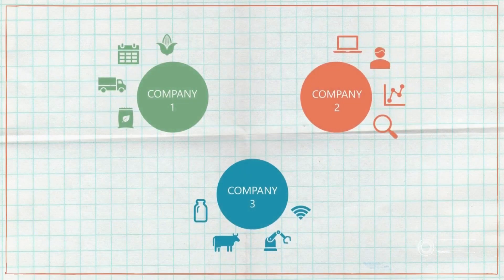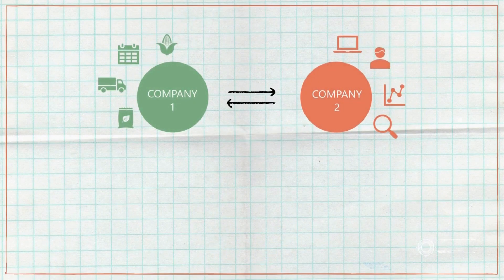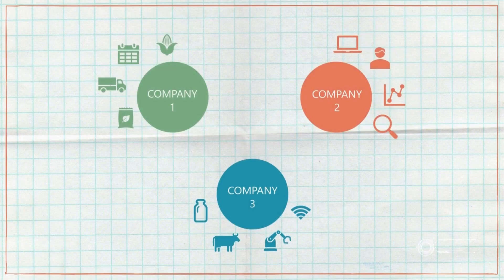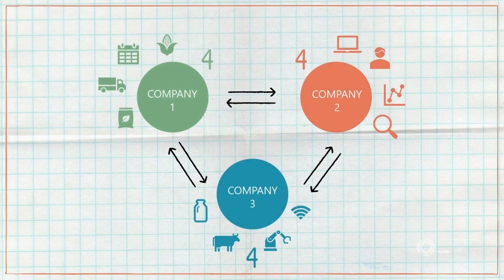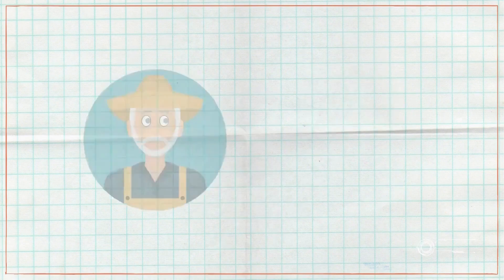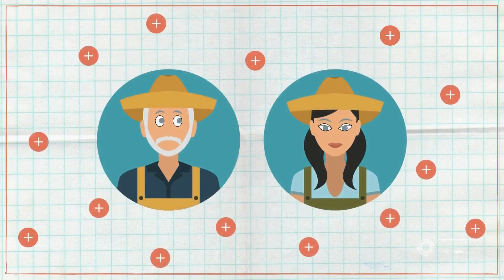Let's think of three players in the market. An interface back and forth between just two of them is maybe easily done. But if all want to connect to gain benefits, everyone would need to start connecting — and it's already four data connections every company must maintain to keep the system stable, six in total. But the farmer wants more.